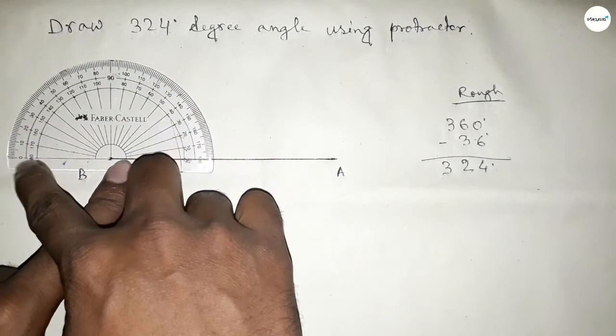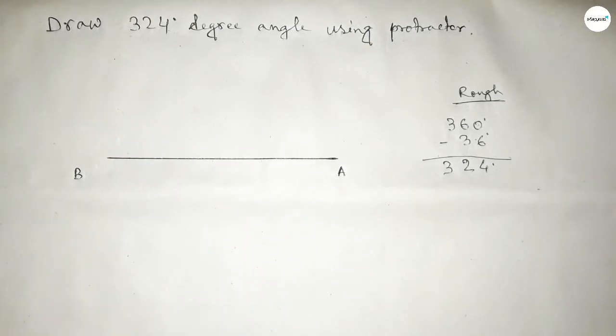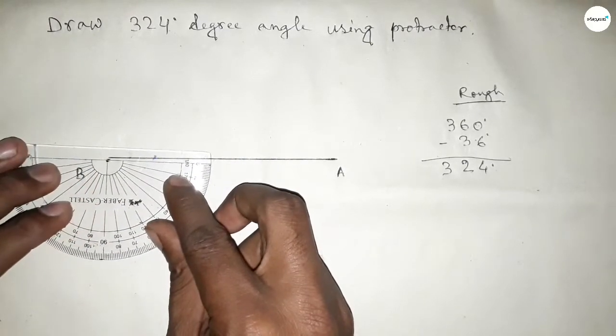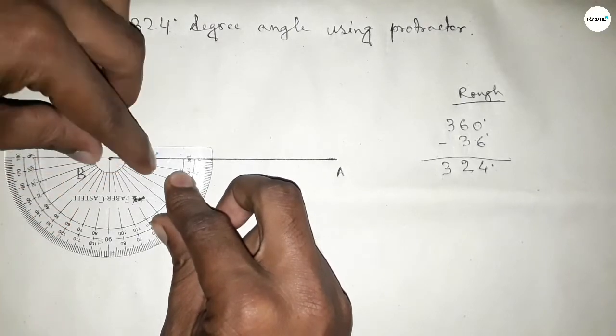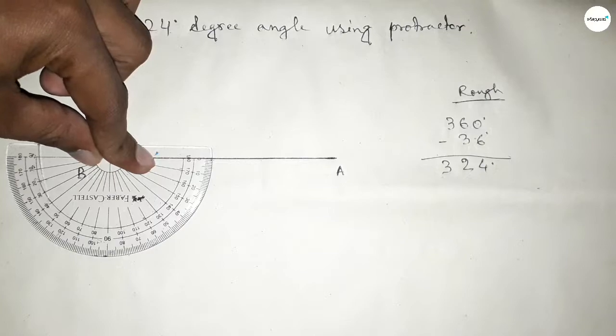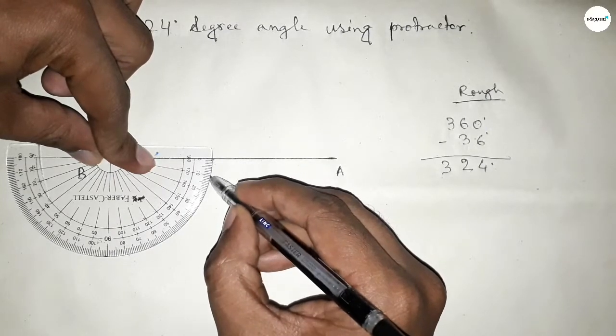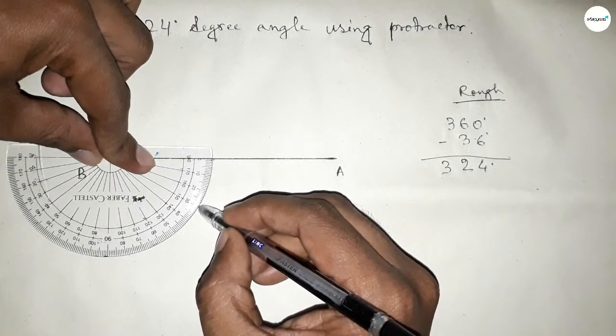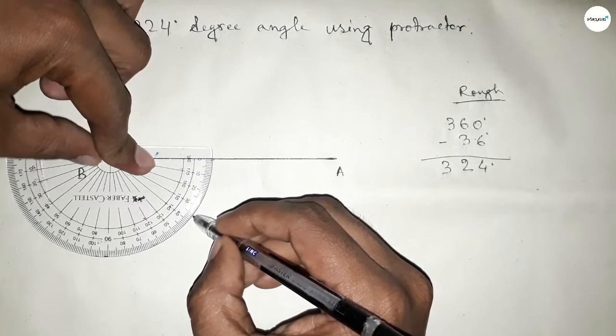This is up to 180 degrees. Now put the protractor on point B this way and count the angle from 360 degrees. Now counting 36 degrees: this is 10, 20, 30, 35, and this is 36 degrees.